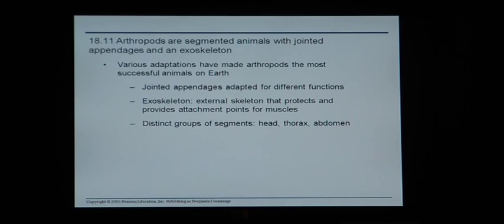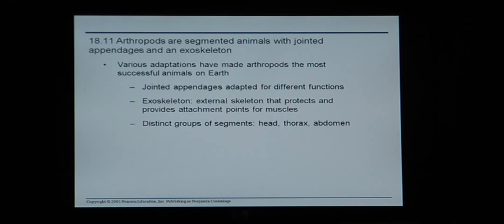Arthropods are segmented animals that have jointed appendages and an exoskeleton. An arthropod is a fancy way of saying an insect, though not all arthropods are insects — an insect is a more specific type of arthropod. An endoskeleton is a skeleton on the inside of the body like we have; an exoskeleton is a skeleton on the outside, a shell like bugs, crabs, and lobsters have. Arthropods have jointed arms and legs adapted for different functions, an exoskeleton that protects and provides attachment points for muscles, and three distinct segments: a head, a thorax (the middle section), and an abdomen (the rear end section).